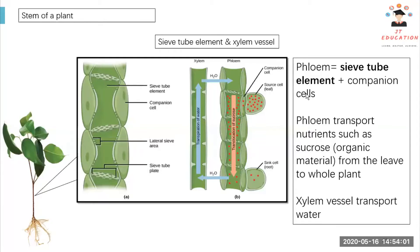The function of phloem is to transport nutrients — nutrients from photosynthesis. After photosynthesis, the plant will make their own food. They will produce sucrose, a type of organic material. So it needs to transport from the leaf to the whole plant, and it relies on phloem to do that.